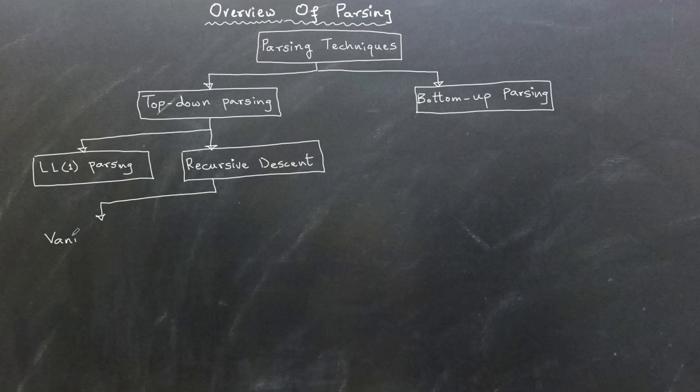The first variation is the typical or vanilla recursive descent parsing, which directly implements the grammar as recursive functions. The second variation is recursive descent parsing with first and follow sets, which uses these sets to improve efficiency and resolve ambiguities.